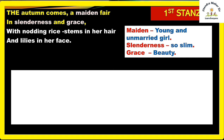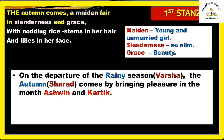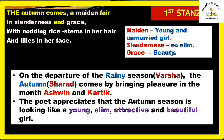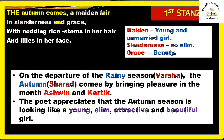The meaning of these lines: on the departure of the rainy season, the autumn comes bringing pleasure in the months Ashwin and Karthik. Every season at its starting feels wonderful and brings happiness. Here the poet appreciates the autumn season, describing it as looking like a young, slim, attractive and beautiful girl. The poet directly compares the autumn season to a beautiful girl — this is a metaphor figure of speech.